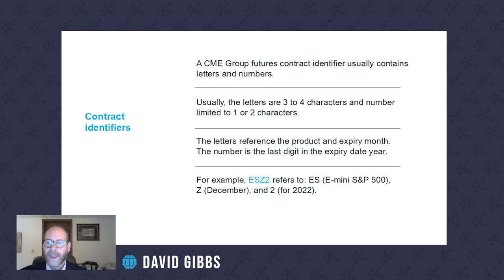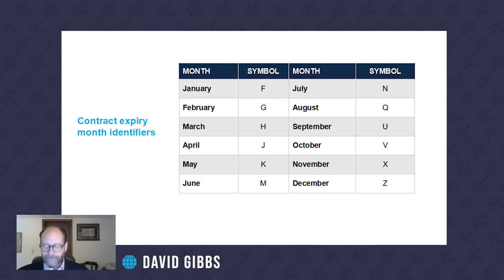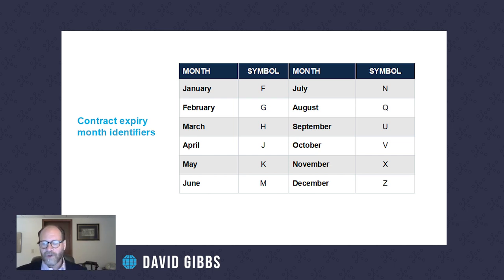Most futures contracts have letter and number identifiers, typically three to four characters. The last digit refers to the last digit of the calendar year, and there's a letter representing the expiration month of that contract. The month letter codes come from an old story about where your fingers fall on a standard keyboard — historically all orders had to be hand key-punched on a teletext machine or into a machine producing computer cards for the clearinghouse.